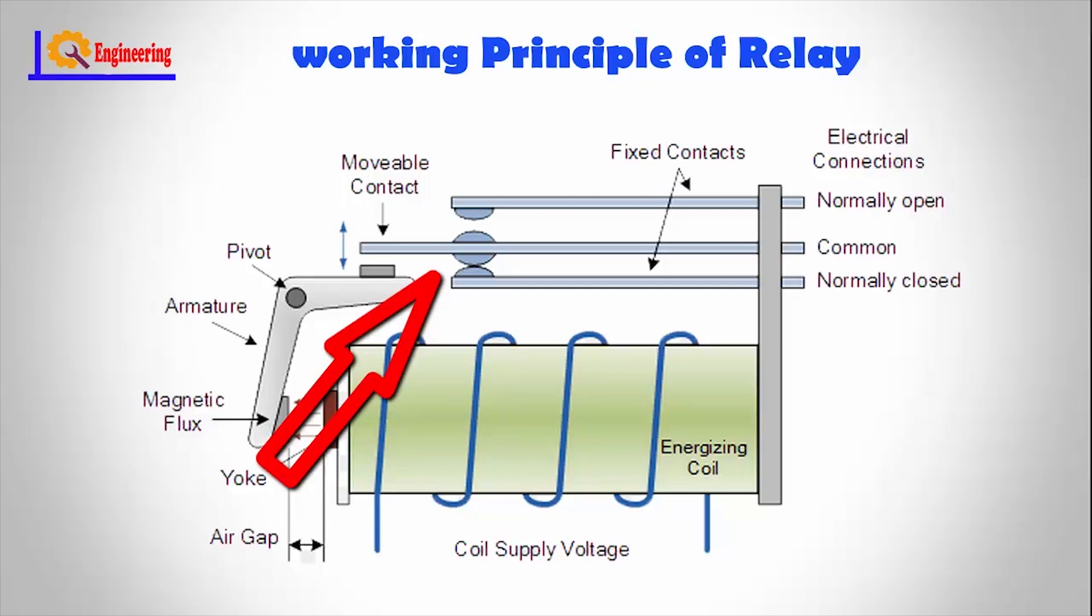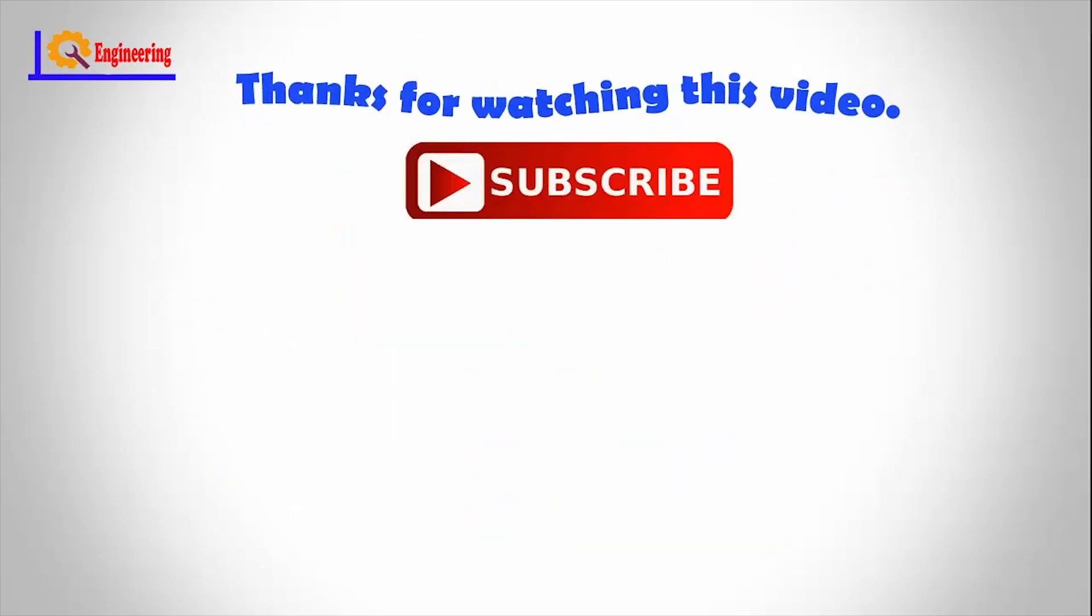The contacts are connected so a current flows through them by default, and switch off only when the magnet is activated, pulling or pushing the contacts apart. Normally open relays are the most common.